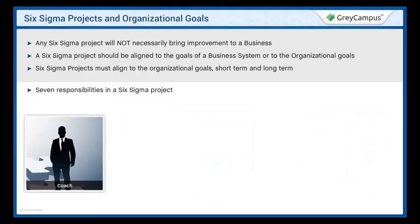4. Coach. The Six Sigma expert or consultant who sets a schedule, defines the results of a project, mediates in conflict, or deals with resistance to the program, is referred to as the coach. The duties of the coach include working as a go-between for sponsor and leadership, scheduling the work of the team, identifying and defining the desired results of the project, mediating disagreements, conflicts and resistance to the program, and identifying success as it occurs.